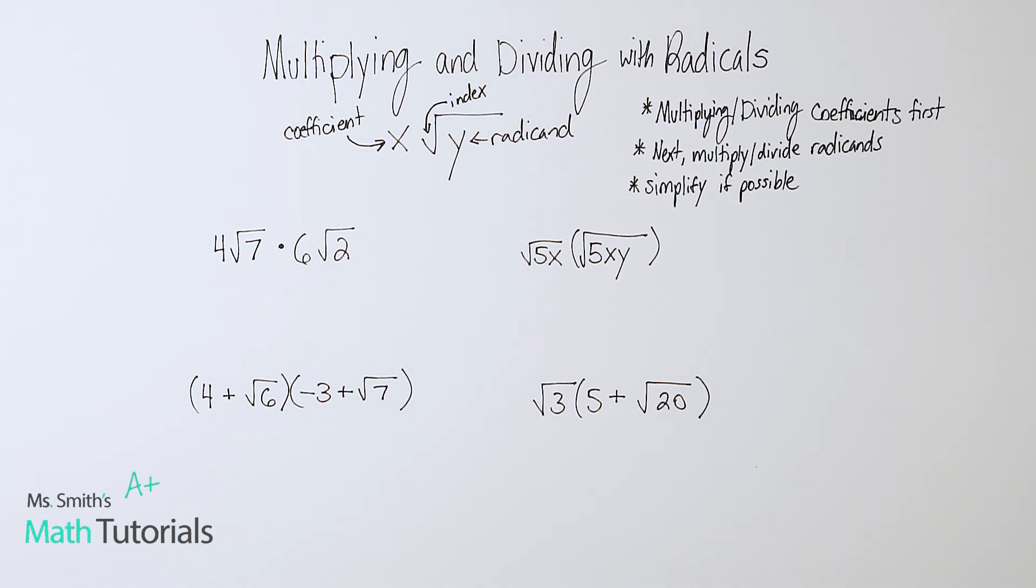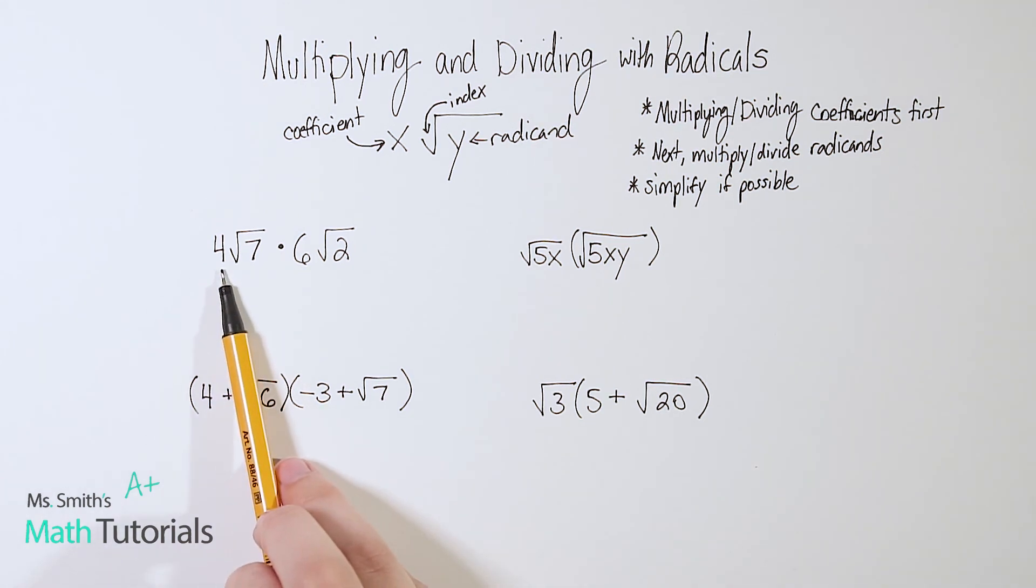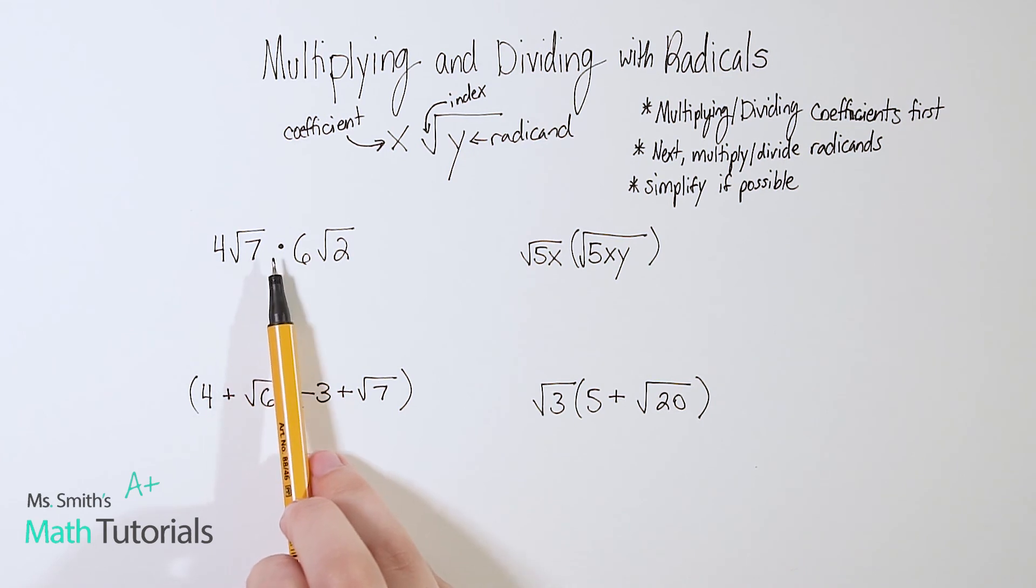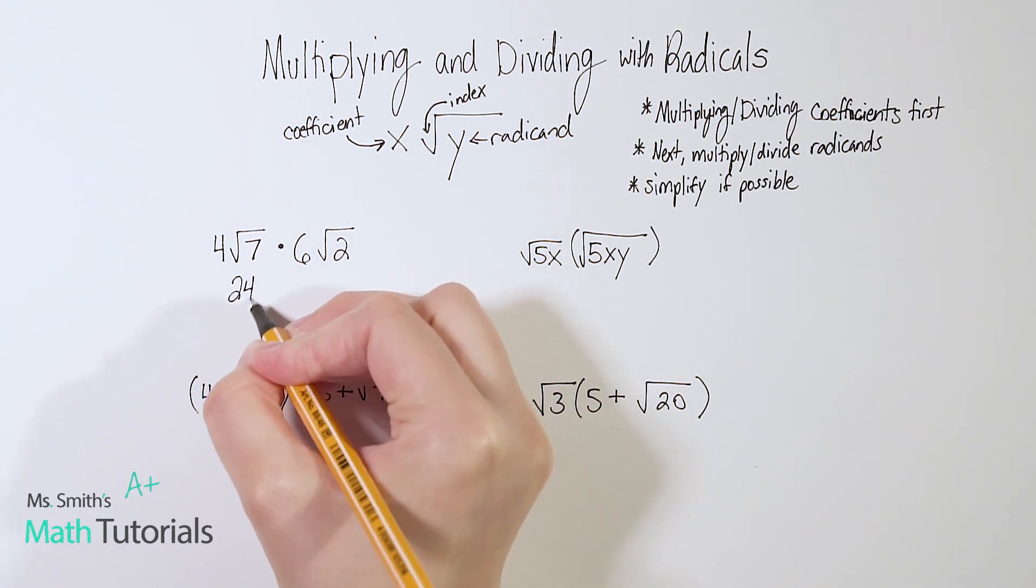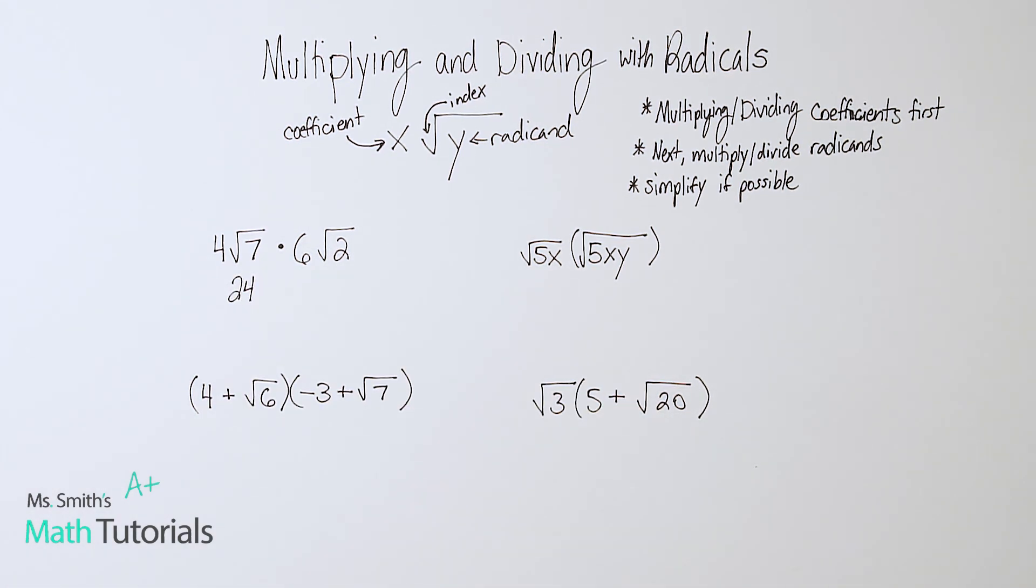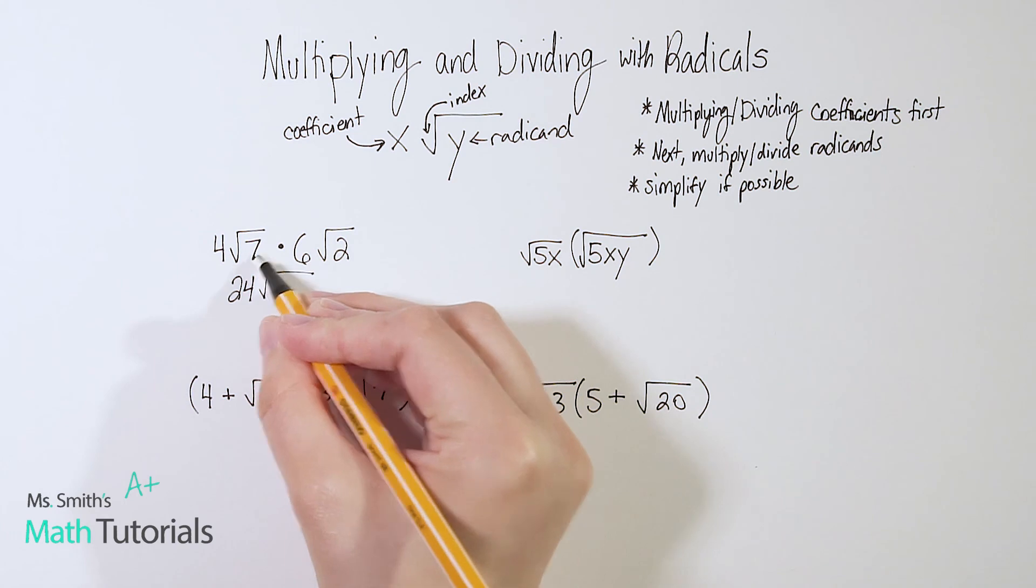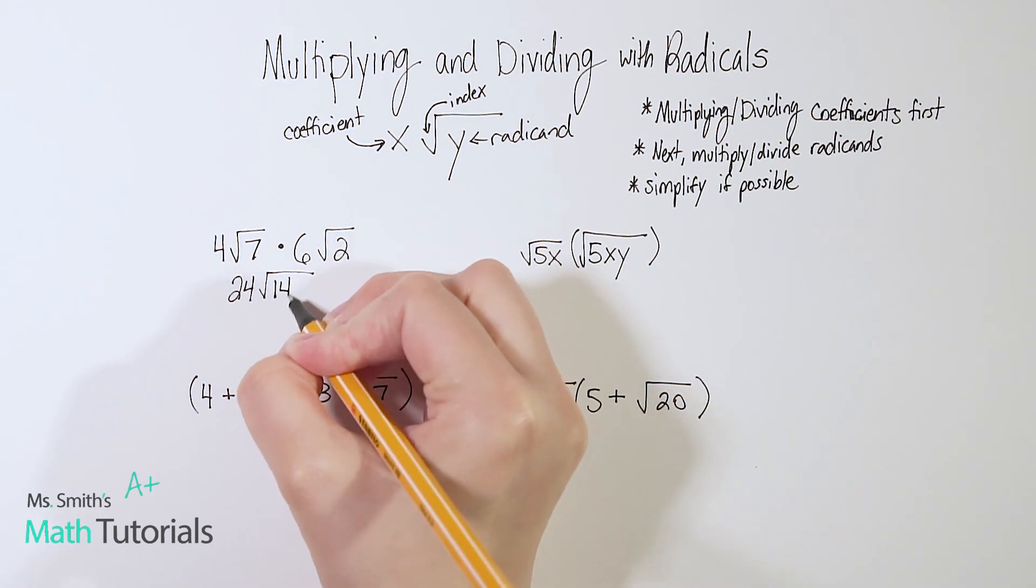But let's dive right in. On this first page, it's all multiplication. Let's see what we've got here. So 4 times the square root of 7 times 6 times the square root of 2. First, we're going to multiply the coefficients, the number outside the radical. So 4 times 6, which we know is 24. Next, we multiply the radicand underneath the radical. So 7 times 2. Now notice these are both square roots. 7 times 2 is 14.